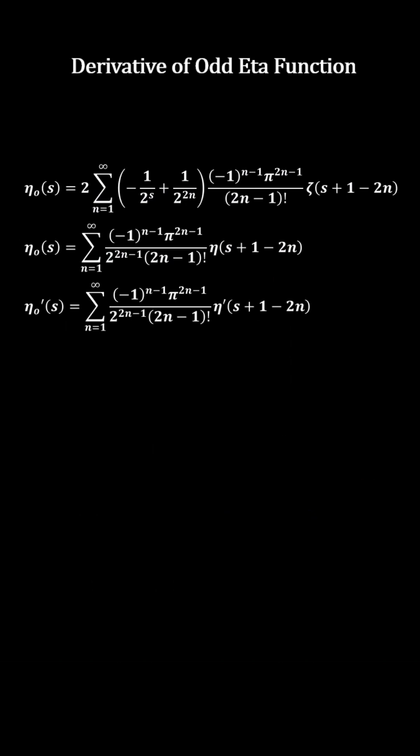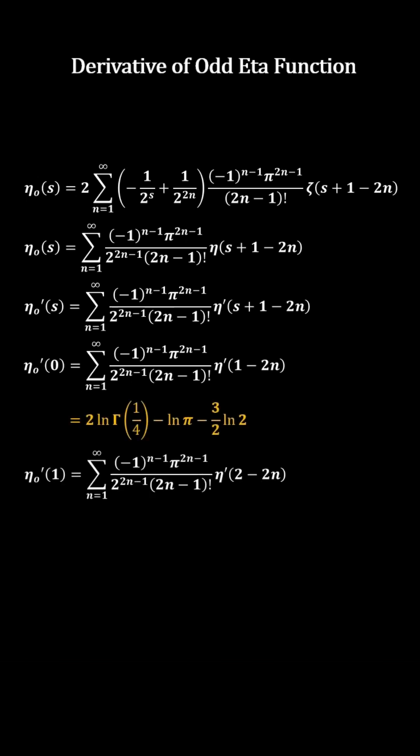From n equals 1 to infinity, the derivative of the odd eta of 0 is the sum of the eta prime of 1 minus 2n, and the derivative of the odd eta of 1 is the sum of the eta prime of 2 minus 2n.